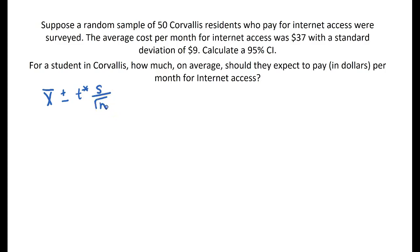So what are all these values? Well, we can pull them from the problem. We have 50, 37, 9, and we have a 95% CI.